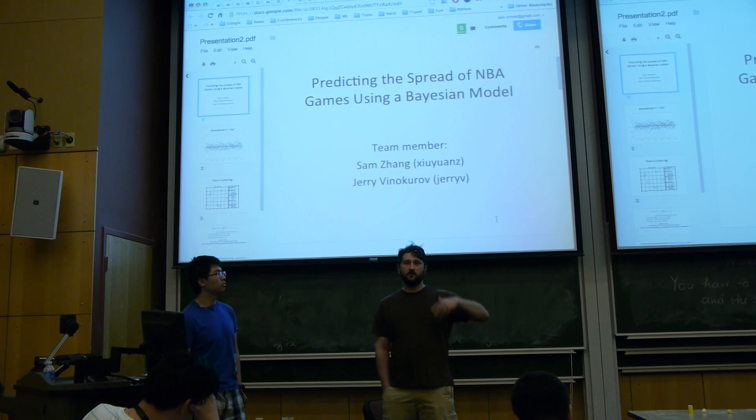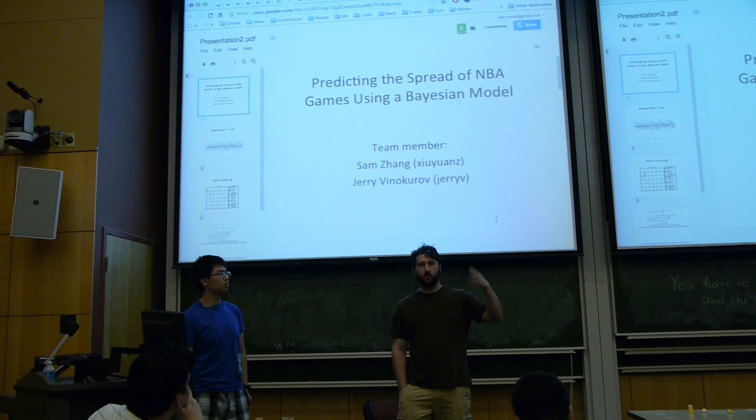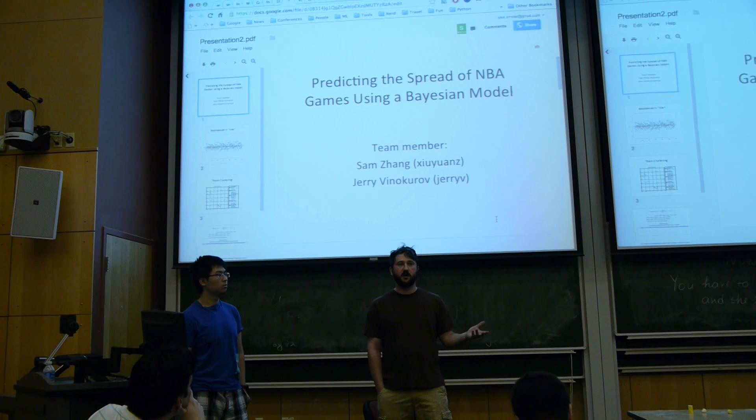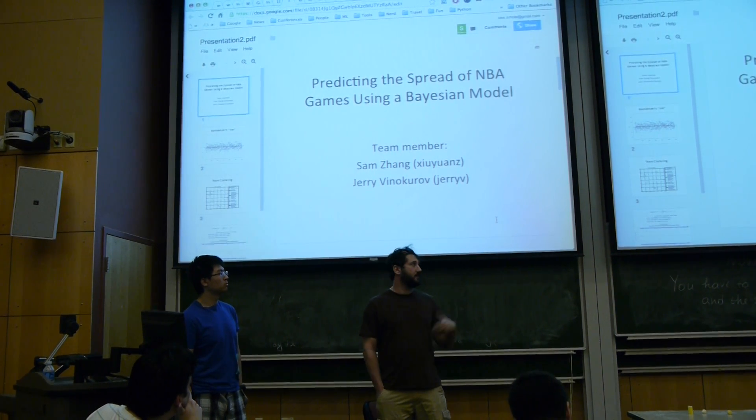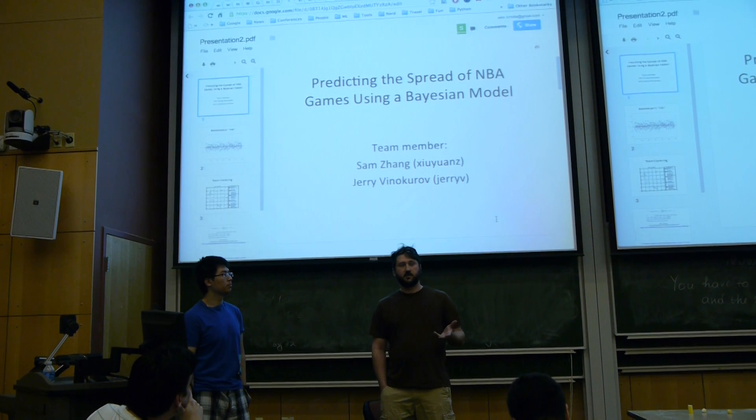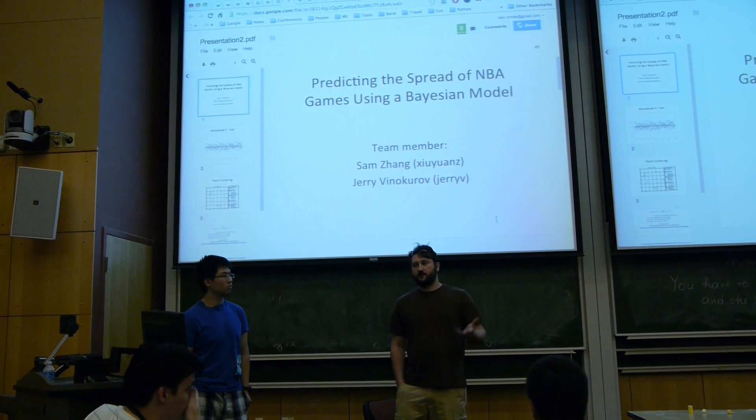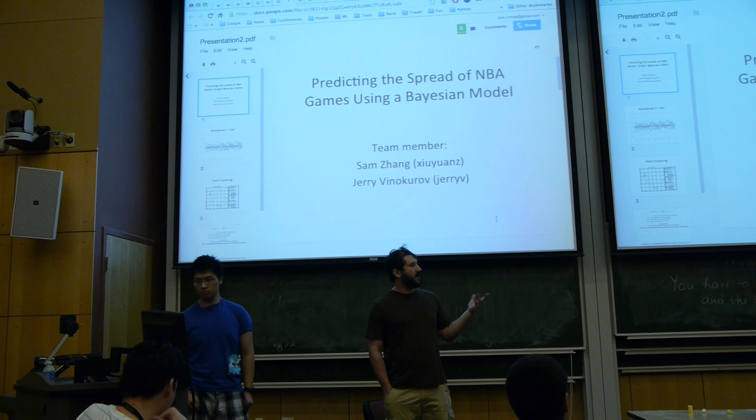And if that team wins by more than that amount, then they've beaten the spread. Otherwise, if they win by less than that amount or they lose the game, the other team has beaten the spread. So the trick is, are there inefficiencies within the bookmakers?